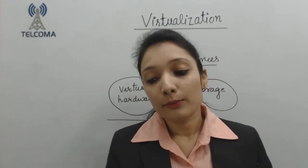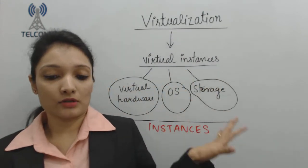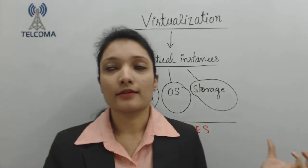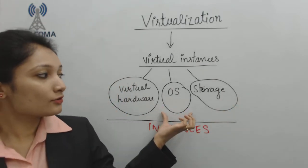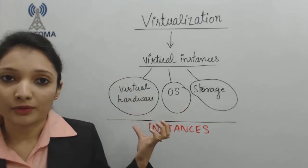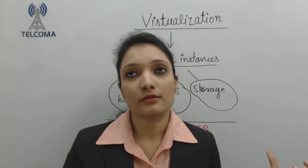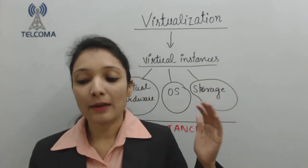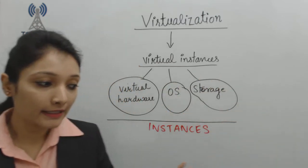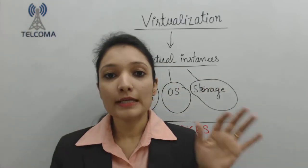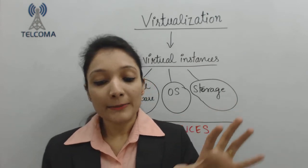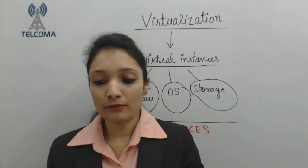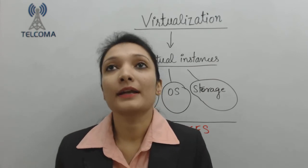Virtualization refers to the act of creating a virtual version of something rather than creating an actual thing. Basically, we have the separation of the operating system from the hardware, meaning you can use multiple operating systems on one hardware. Examples include VMware Suite, MS Virtual PC, Hypervisor, or VirtualBox, which enable the virtualization platform. It is a technology to run multiple — same or different — operating systems on one system, completely isolated from each other.